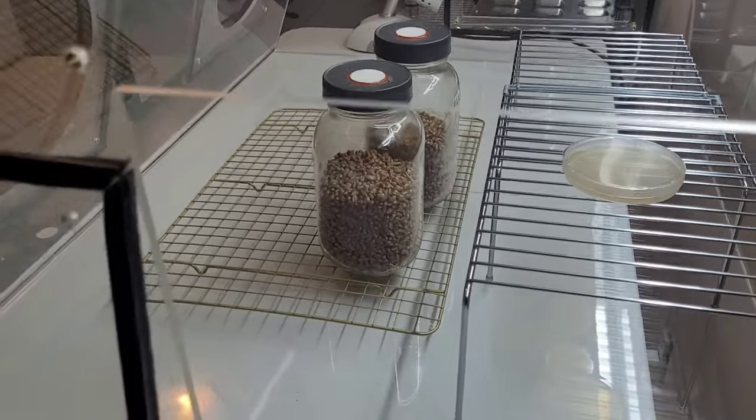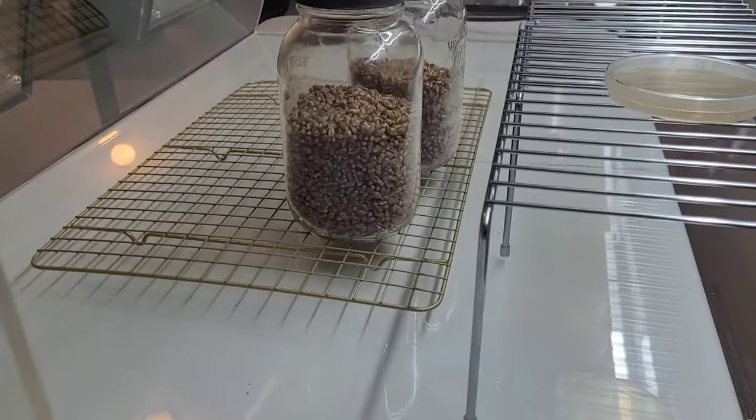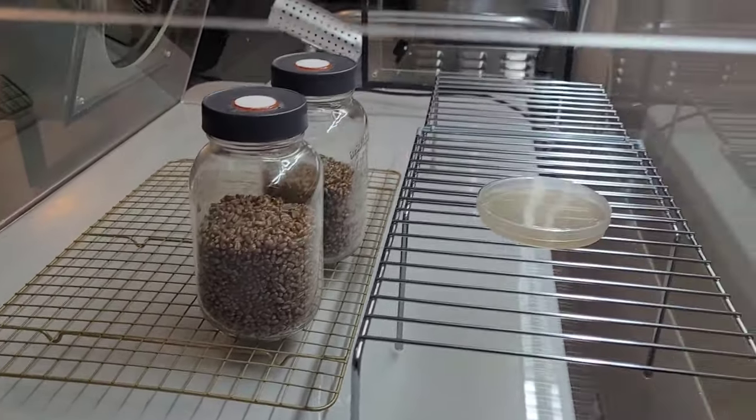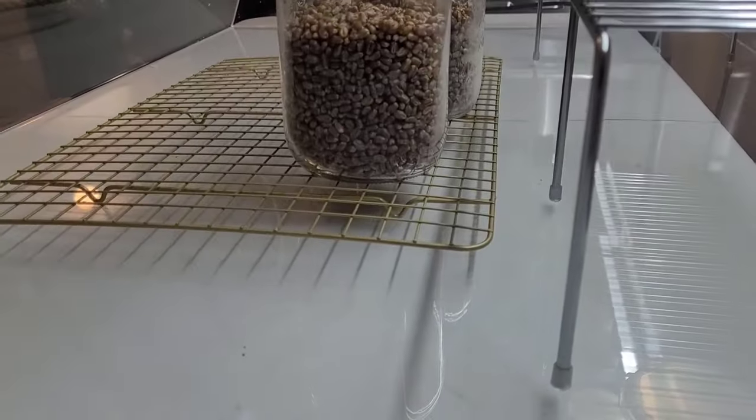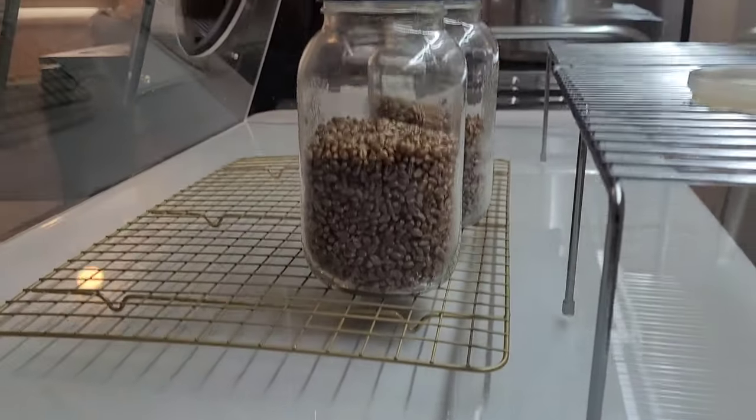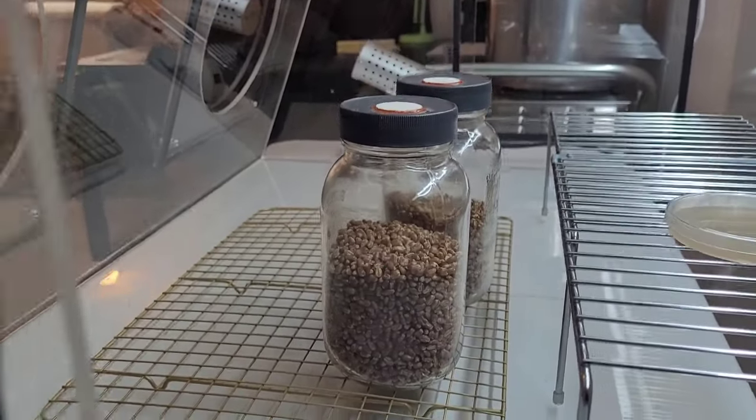When loading your still air box, ensure that you have at least one kind of rack. I suggest two. You'll see I have two different heights of rack here. This smaller or shorter cookie rack is to elevate my jars off of the floor of the still air box.